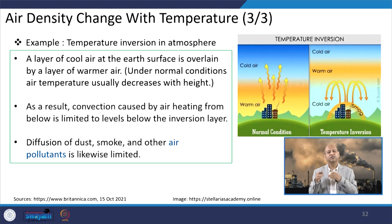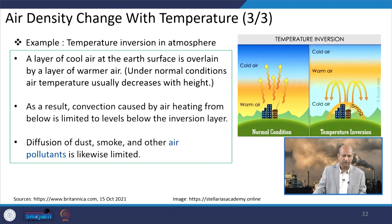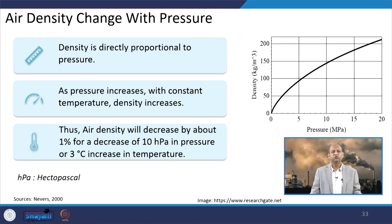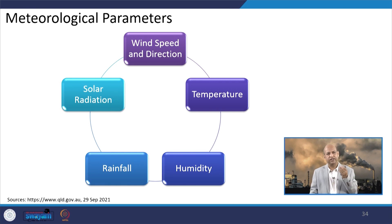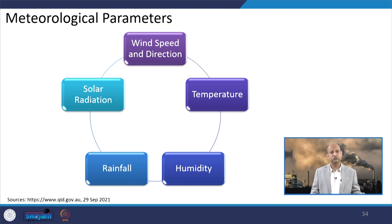Inversion occurs when temperature increases rather than decreases with height — a very dangerous phenomenon regarding vertical movement and vertical dispersion of air pollutants. Air density will decrease by about 1 percent for a decrease of around 10 hectopascal pressure or a 3 degree Celsius increase in temperature. In summary, the meteorological parameters most important from an air pollution standpoint are: wind speed and direction, temperature, humidity, rainfall, and solar radiation — all of which influence the dispersion and build-up of air pollution at certain locations.